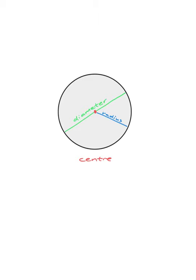We want to notice a few things. First, about the diameter: the diameter goes from one edge to the other through the center, so quite clearly it's made up of one radius and then another radius. And so the diameter is just going to be two times the radius.